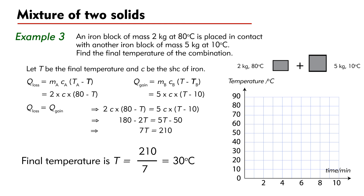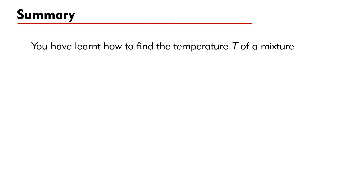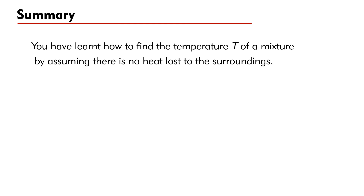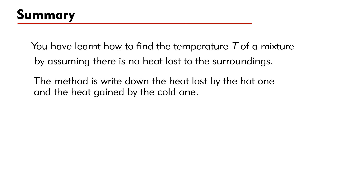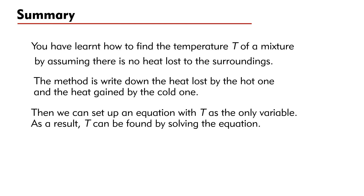The temperature of the two blocks changes with time as shown in the graph. In summary, you have learned how to find the temperature T of a mixture by assuming that there is no heat loss to the surroundings. The method is to write down the heat loss by the hot object and the heat gain by the cold object, then set up an equation with T as the only variable. As a result, T can be found by solving the equation.